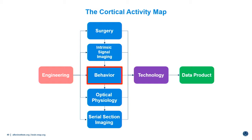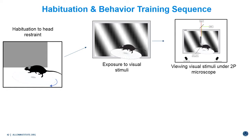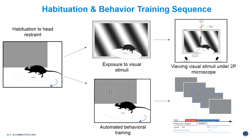All behavior training begins with a habituation procedure. Animals are gradually introduced to being head fixed and to the running disc. Once animals complete a week of habituation, they transfer to one of two tracks. In the first track, they get additional exposure to a visual stimulus before going on to a two-photon imaging session. In the second track, animals stay in the behavior training facility and are trained on a visual detection task — trained to report when they detect a target visual stimulus by licking, for which they receive a reward — and then go to 2P imaging while performing a visually guided behavior task.